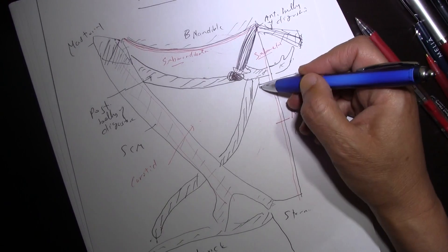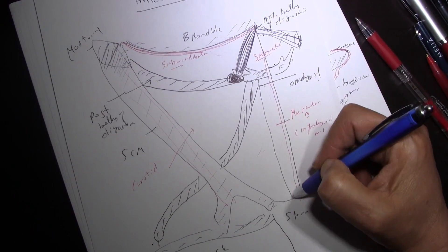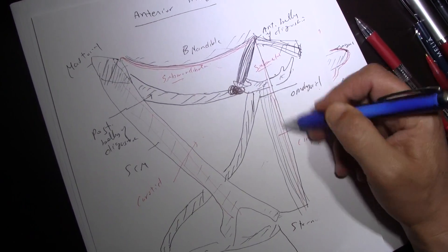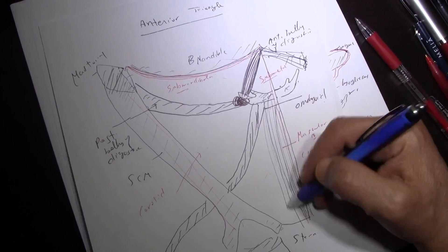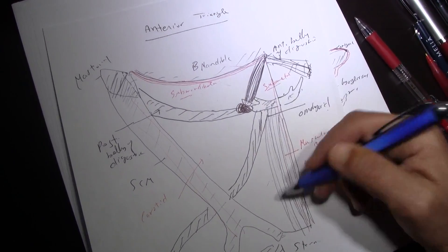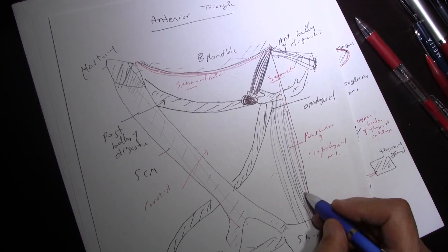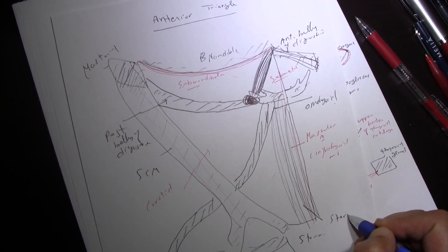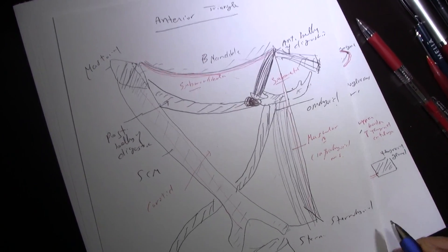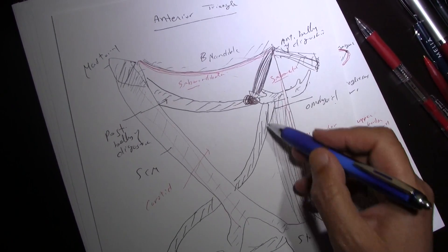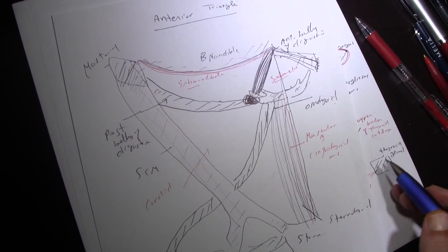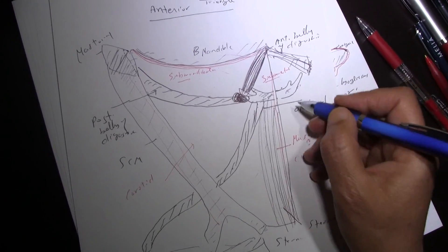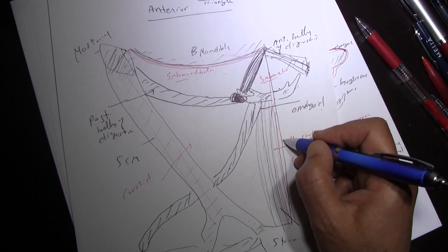The major contents of the muscular triangle are the infrahyoid muscles. There is a muscle extending from the sternum to the hyoid bone — this muscle is called the sternohyoid. You have two superficial infrahyoid muscles: the sternohyoid and the omohyoid.